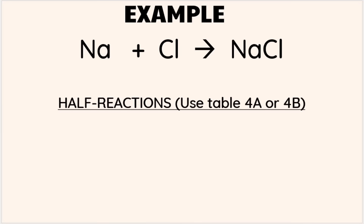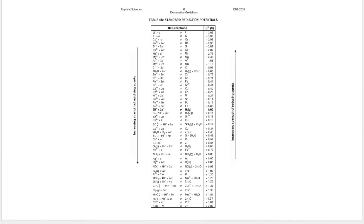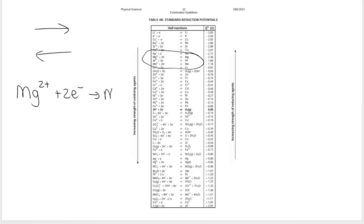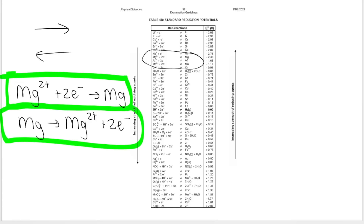Moving forward in future videos, when we do redox reactions, we're going to learn how to use Table 4a or 4b, which lists a whole bunch of half reactions written with double arrows because the reaction can be read in either direction. For example, the magnesium half reaction from the table can be written in one direction or the other. When you write a half reaction — either a reduction or oxidation half reaction — always use a single arrow, not a double arrow, even though the table uses double arrows.